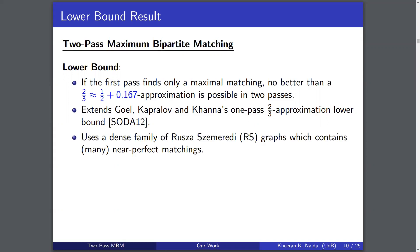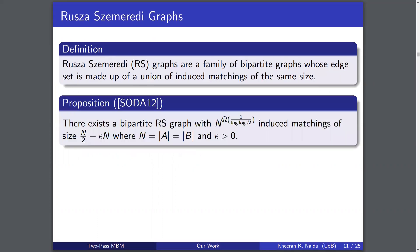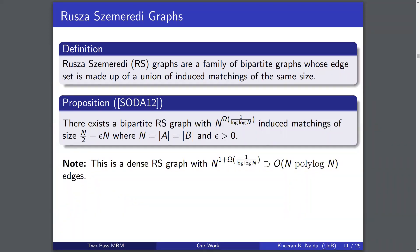Their work relied on a dense family of Ruzsa-Szemerédi graphs, and our work relies on a similarly dense family of graphs. However, they have to contain at least one near-perfect matching. We show that the construction contains many near-perfect matchings, and this result may be of independent interest. A Ruzsa-Szemerédi graph is simply a graph whose edge set is made up of a union of induced matchings, each of the same size. What Goel, Kapralov, and Khanna prove is that there exists a very dense Ruzsa-Szemerédi graph, and the key property is that the memory required to store its edges is significantly greater than what's allowed by the semi-streaming model.